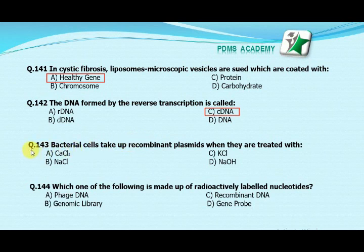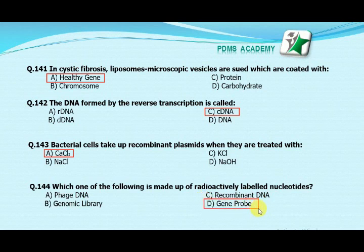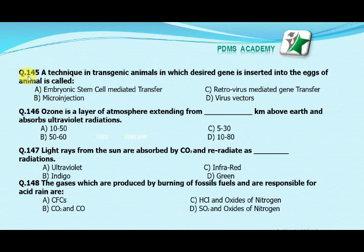Our next MCQ is: bacterial cells take up recombinant plasmids when they are treated with — Option A: calcium chloride. Option B: sodium chloride. Option C: potassium chloride. Option D: sodium hydroxide. Our correct answer is A, calcium chloride. Our next MCQ is: which one of the following is made up of radioactively labeled nucleotides? Option A: phage DNA. Option B: genomic library. Option C: recombinant DNA. Option D: gene probe. Our correct answer is D, gene probe.